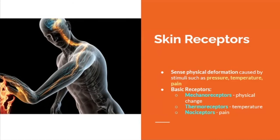For skin receptors: this receptor type senses physical deformation caused by stimuli such as pressure, temperature, and pain. There are three basic skin receptors: mechanoreceptors, which detect physical change; thermoreceptors, which detect temperature; and nociceptors, which detect pain.